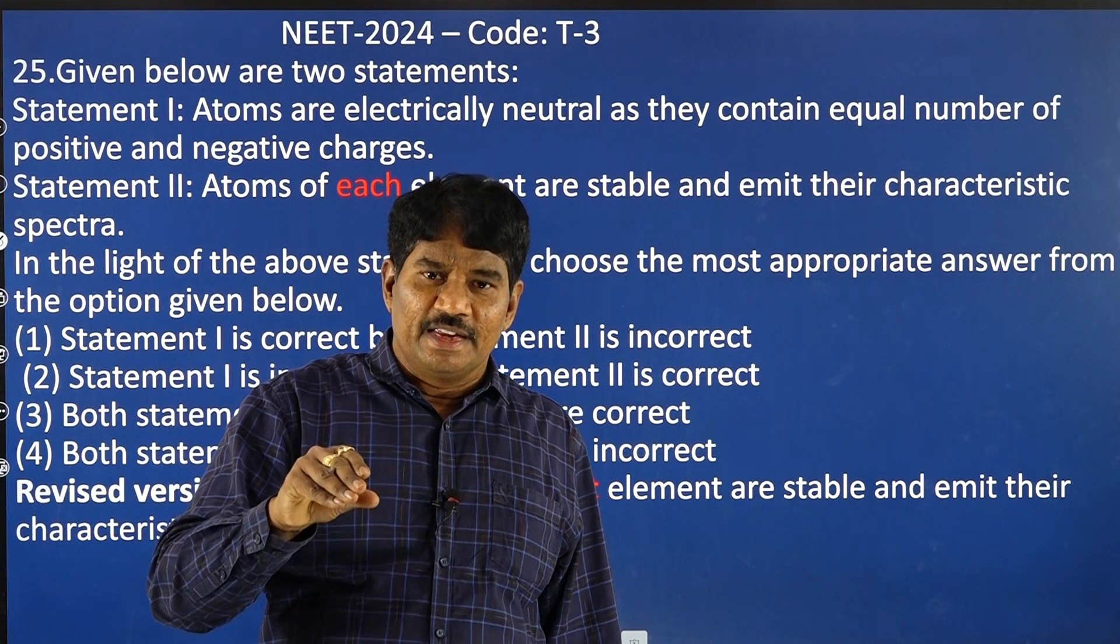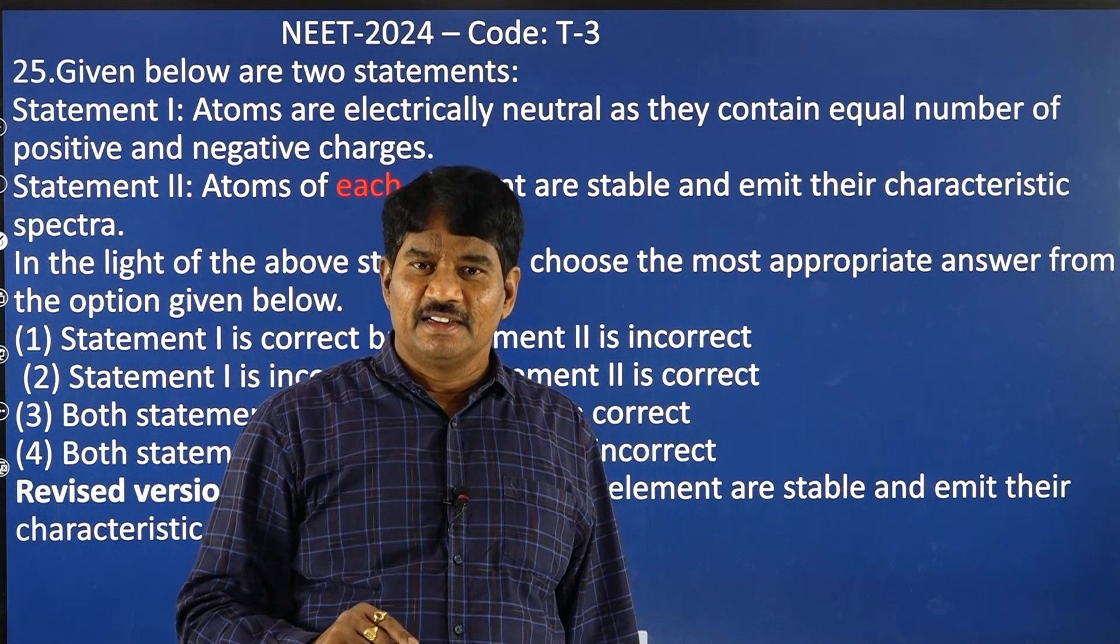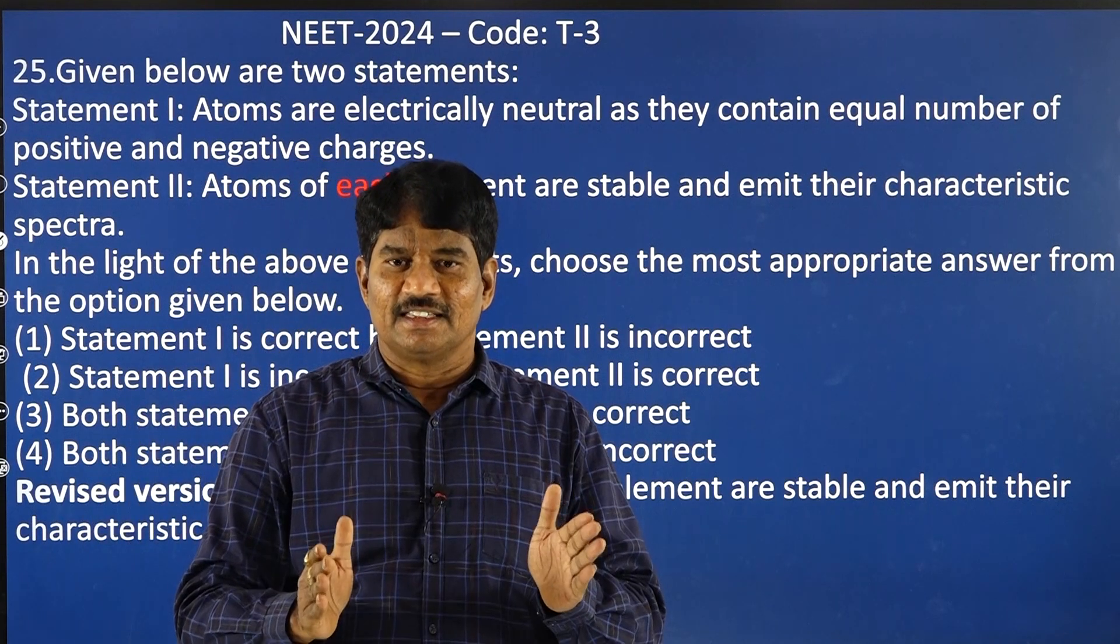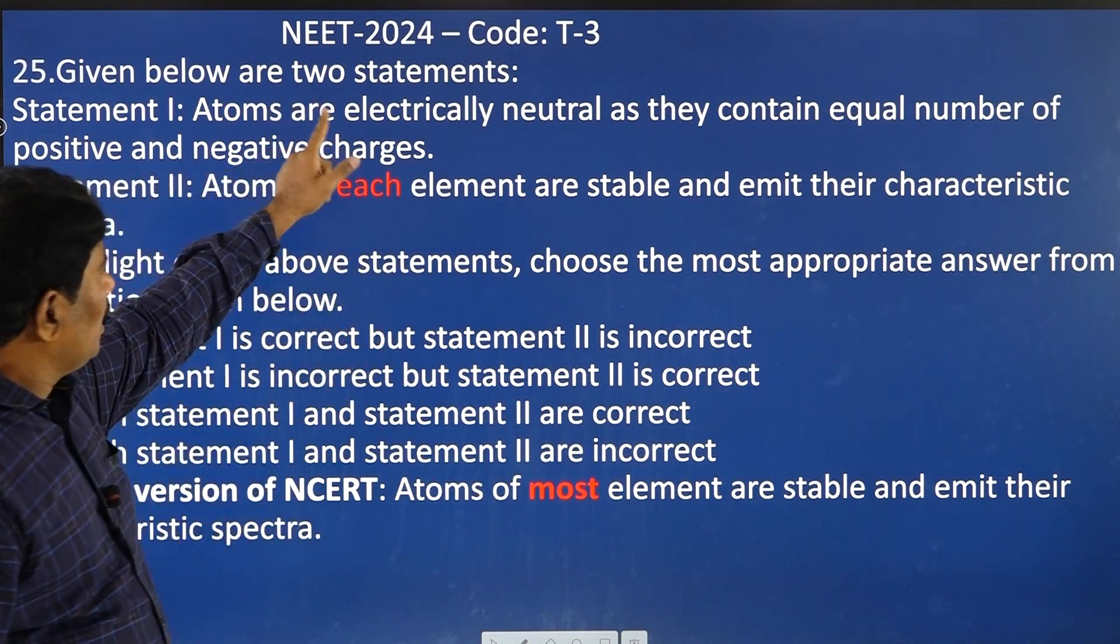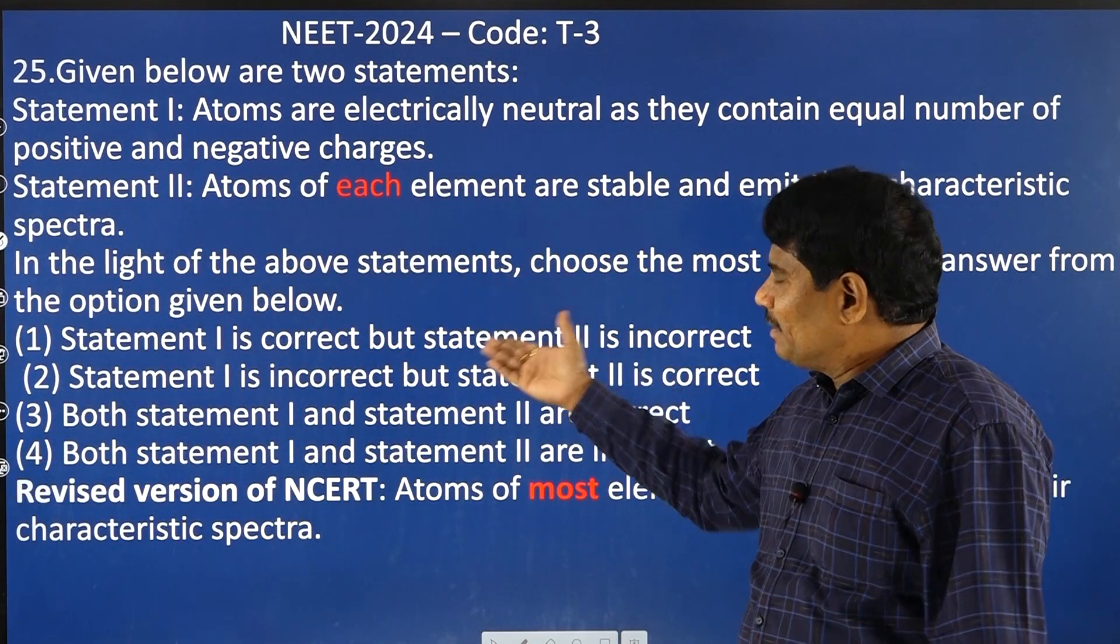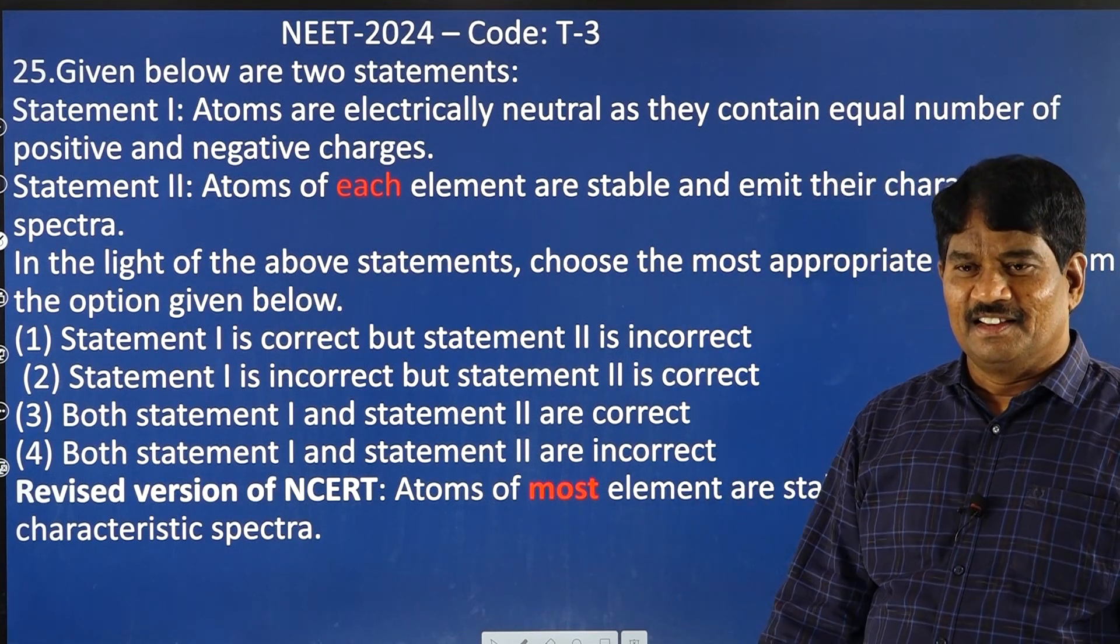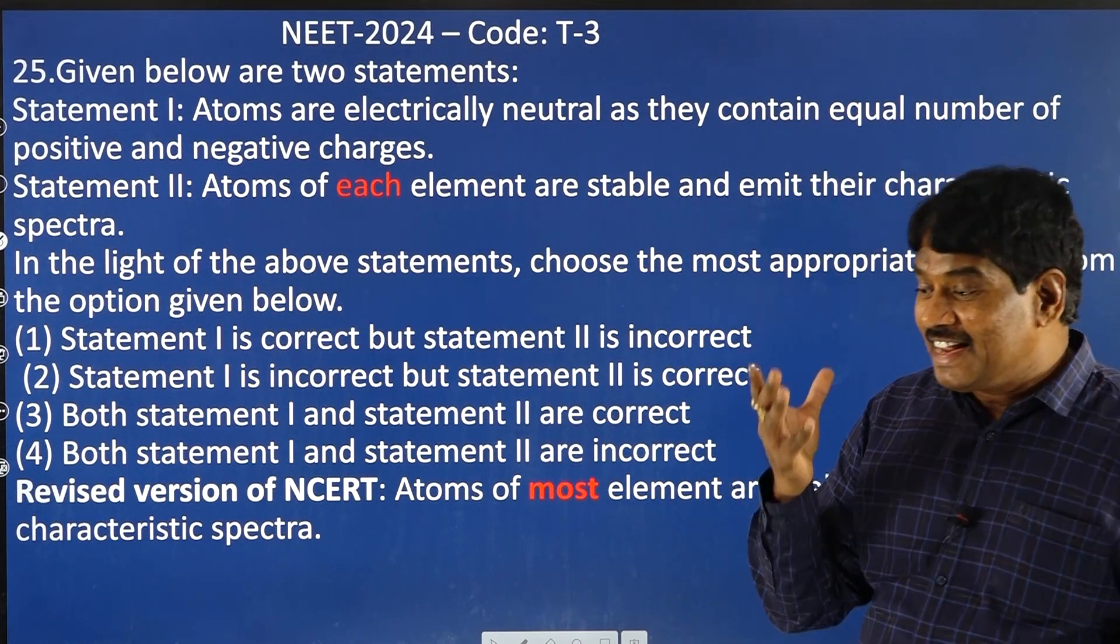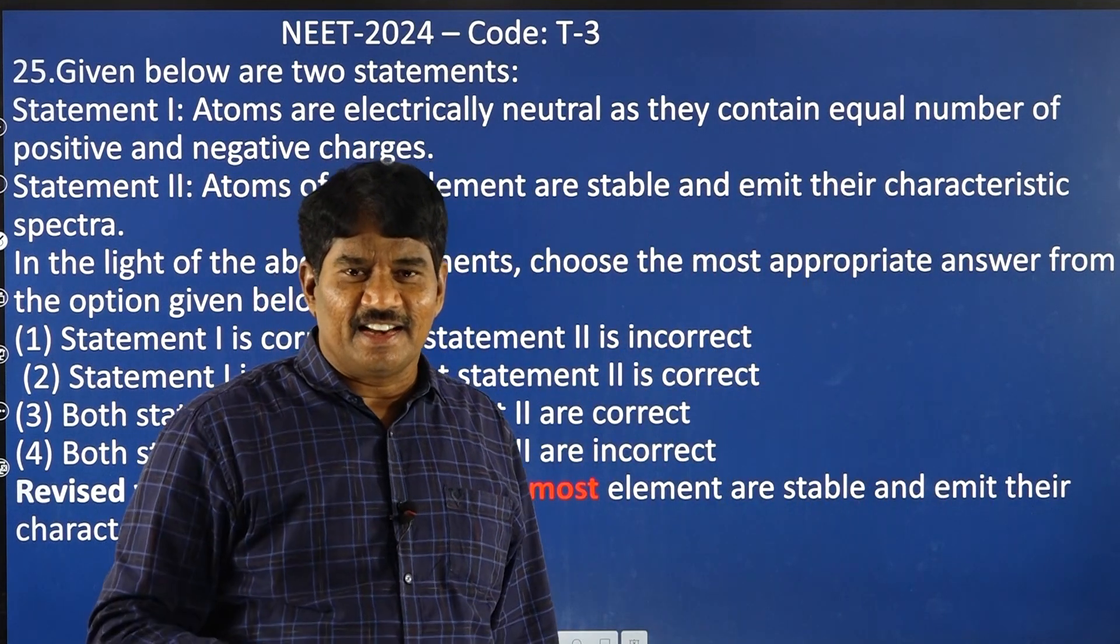In this scenario, even if there is a controversy with one question, one question will make great difference. One of such instance occurred in the NEET 2024 in the physics, in the code T3, question number 25. Two statements are given, wonderful statements, and every student knows the answer for that. But there is some ambiguity. The reason for the ambiguity is in the latest version of the NCERT, they changed.